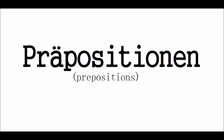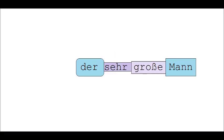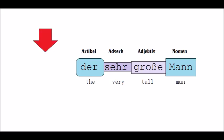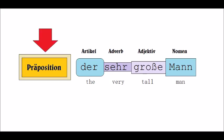Prepositions are usually short words with an abstract meaning. As the name suggests, they stand before something — and that is a noun phrase. A noun phrase is a noun and the article, adjectives, and possibly adverbs that it comes with. For example: 'Der sehr große Mann' — the very tall man. This noun comes with an adjective, an adverb, and a definite article. Before the article is where you will always place the preposition.